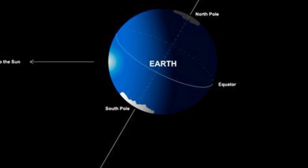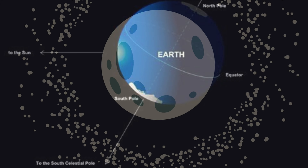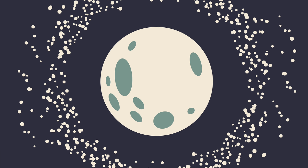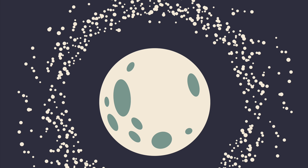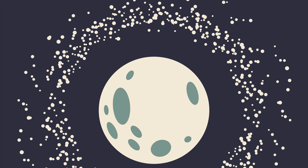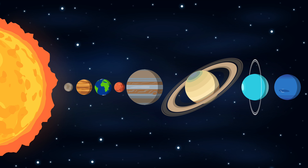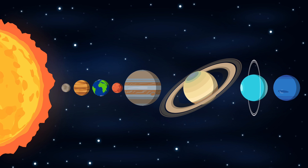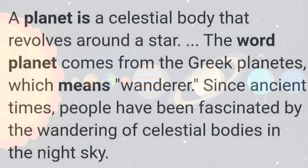Stars helped Earth dwellers — and maybe even animals — to determine directions. For example, the Pole Star always remains in the same position relatively. Now, planets are celestial bodies; they don't have their own heat or light — they are lit by the light of stars. The word 'planet' comes from a Greek word, Planesia, which means 'wanderers.'